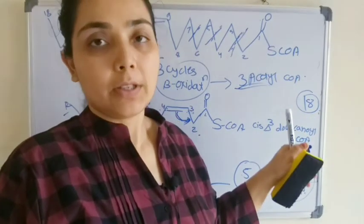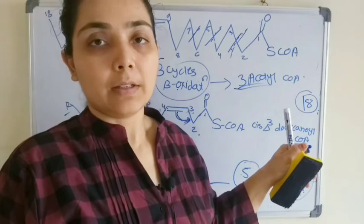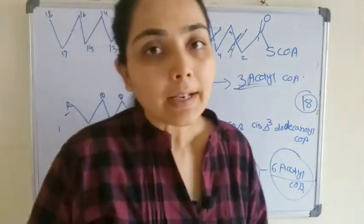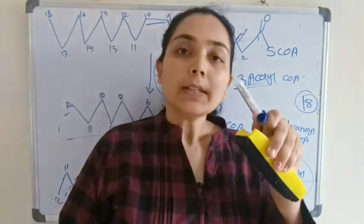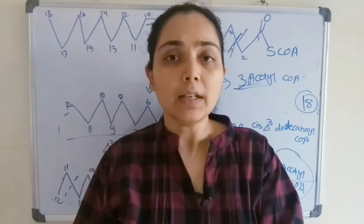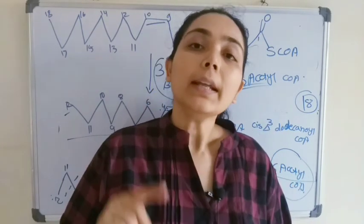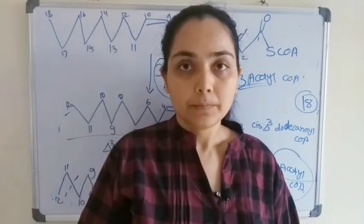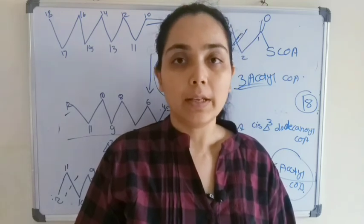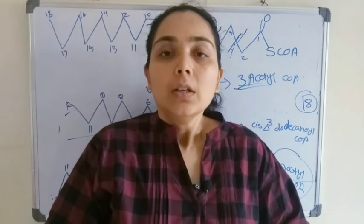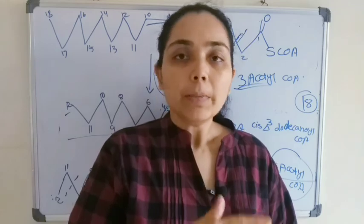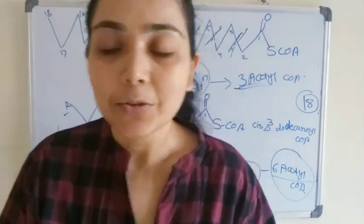So that is the beta oxidation of monounsaturated fatty acid, with oleic acid as the example. In the next class we will see the beta oxidation of polyunsaturated fatty acid, using linoleic acid as the example. Thank you.